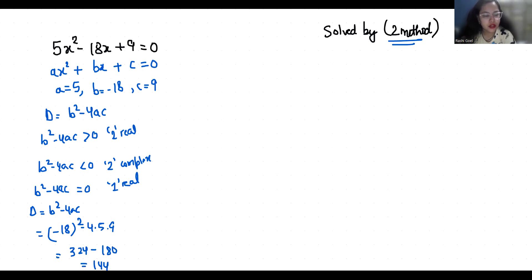That means two real solutions exist. Method 1. Our equation is 5x²-18x+9=0. I am going to use quadratic formula that is -b±√(b²-4ac) by 2a.